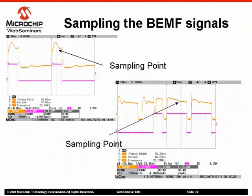However, the sampling point moves forward according to the PWM duty cycle to reach the maximum point of 75% of the PWM on time when the PWM duty cycle is equal to 100%.